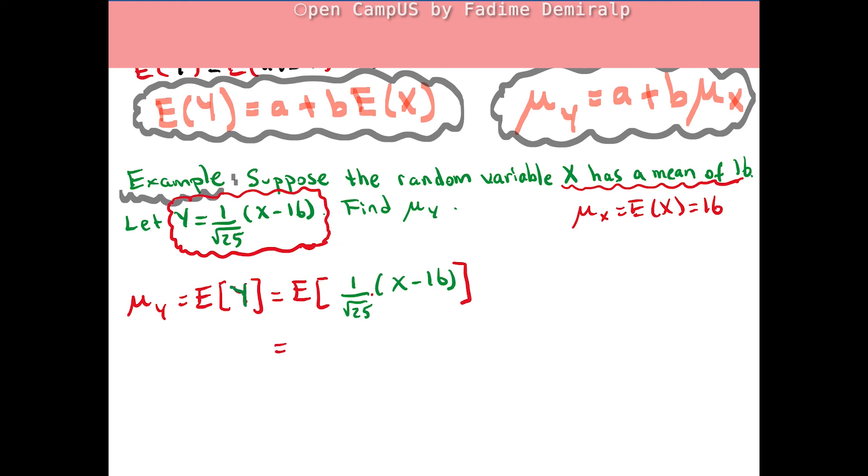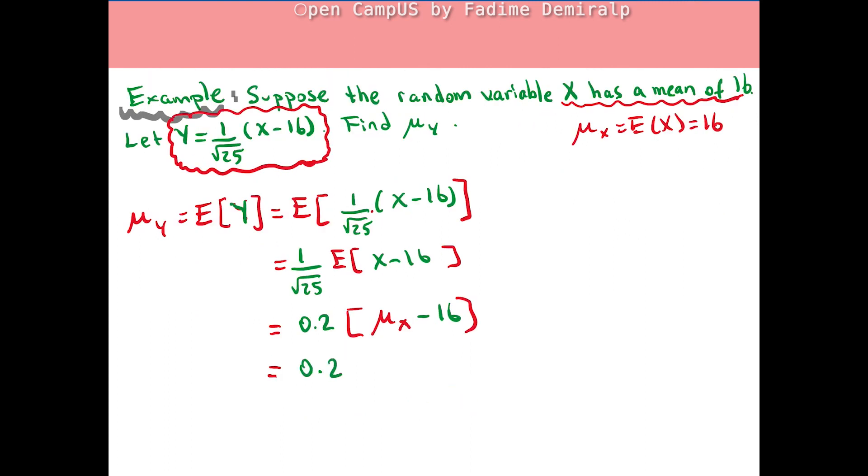Expected value of this product is the constant times expected value of (X minus 16). 1 over √25 is 0.2. Then the expected value of X minus 16 is expected value of X minus 16. X has a mean of 16, that is given in the question.